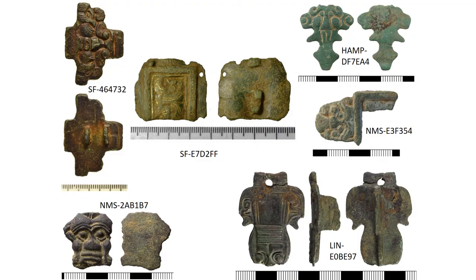A quick word on fragments: florid cruciforms tend to break up into lots of small bits which aren't very easy to recognise. There are many other similarly decorated objects — both dress accessories and horse harness accessories — so it's not easy to recognise if a fragment is from a brooch. Sometimes you have clues such as a pair of lugs on the reverse to hold the pin bar, but other times it's not so obvious. Remember, if you get stuck you can always check with your finds liaison officer or one of our finds advisors.